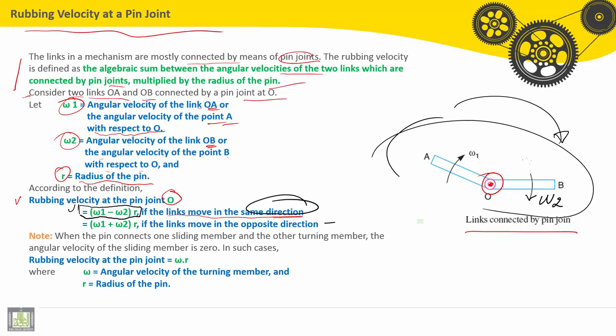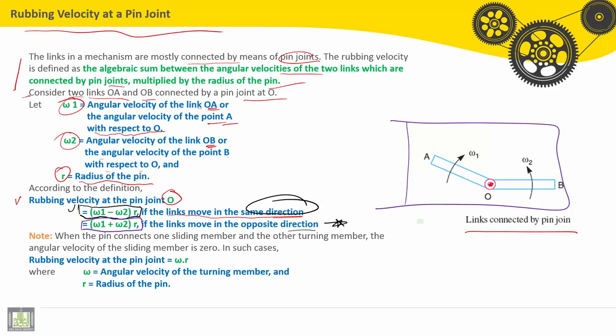Second case: if the links move in the opposite direction, the formula for rubbing velocity is omega 1 plus omega 2 multiplied by R. This is the formula if we have this configuration where both links move in opposite directions.